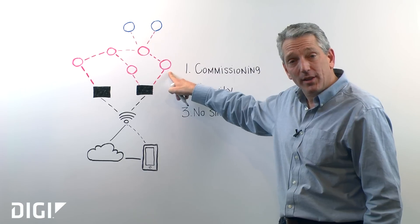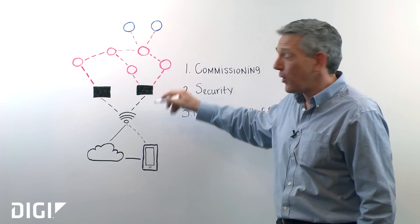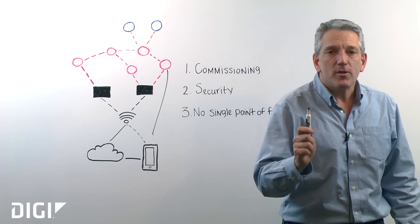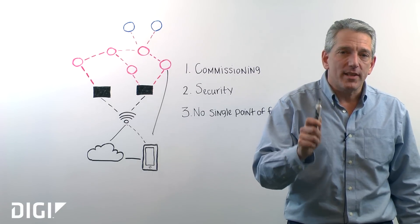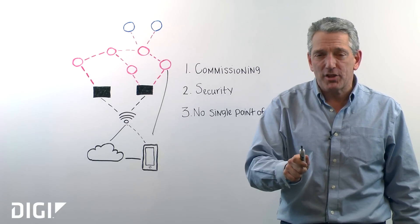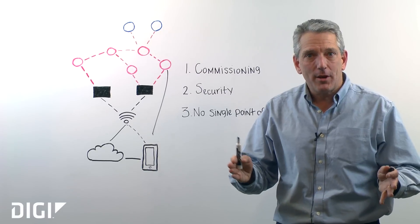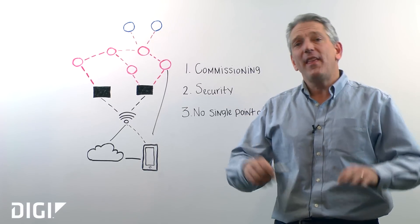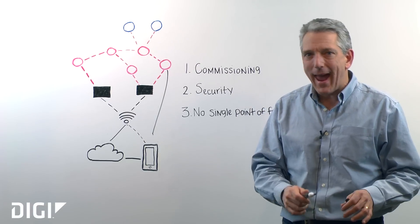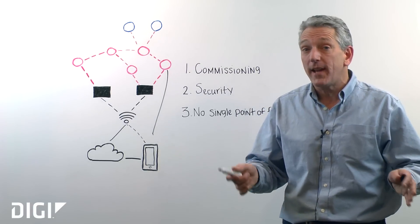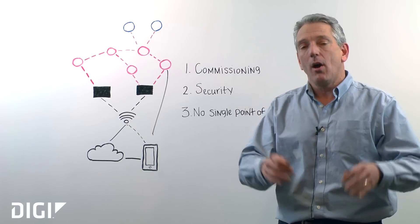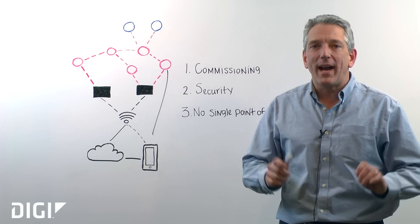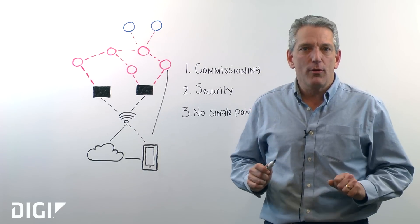When a node wants to join the Thread network, the first thing it does is say, "I want to join." A smartphone app actually receives that request. You enter in the passphrase, and voila — after a whole lot of fancy math and some elliptical curve Diffie-Hellman based negotiations, that node is part of the Thread network with all the rights and privileges due to that node.